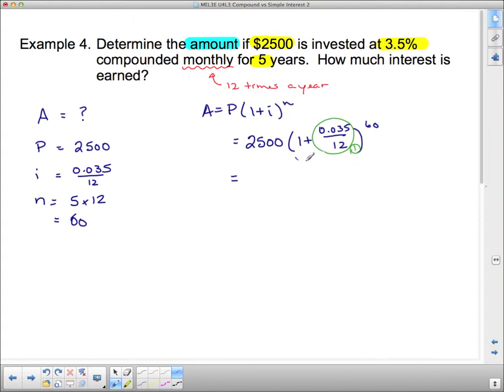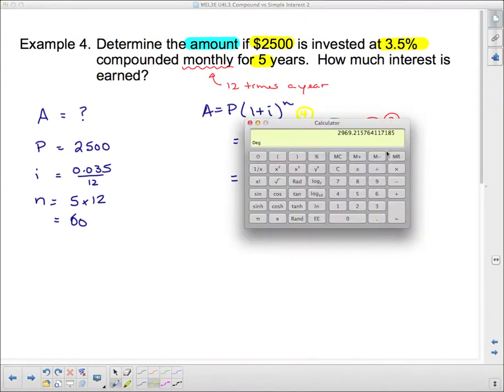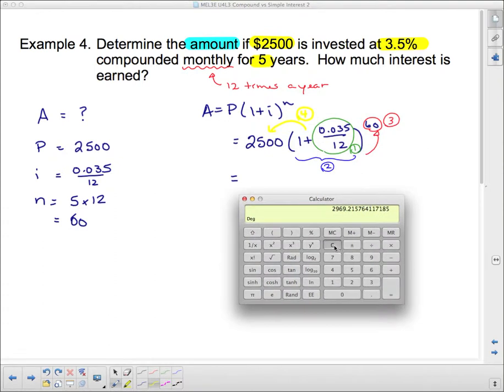Now, here's how we're going to type it into the calculator. We're going to type this part in first. That's going to be our first calculation. Then, we're going to add these things together. That's going to be our calculation number 2. Then, we're going to raise it to the exponent 60. That's going to be our calculation 3. And at the very last, we're going to take and multiply these two things together. That's going to be our calculation 4. So that's the order we're going to do it in.